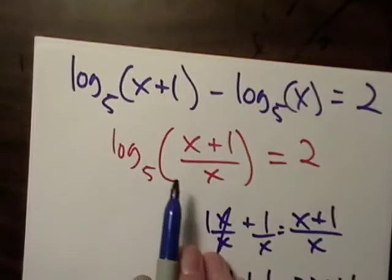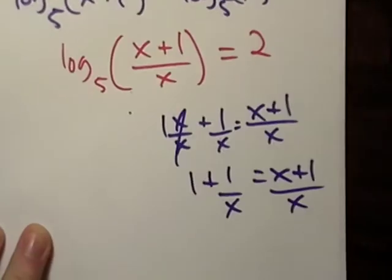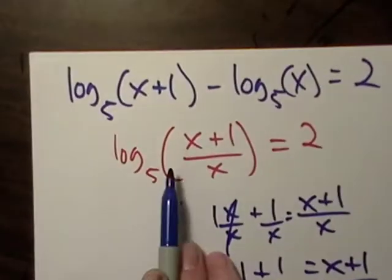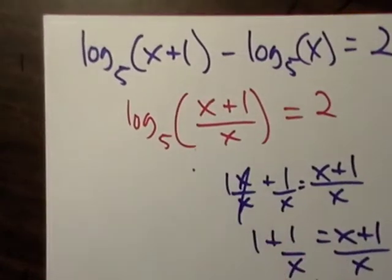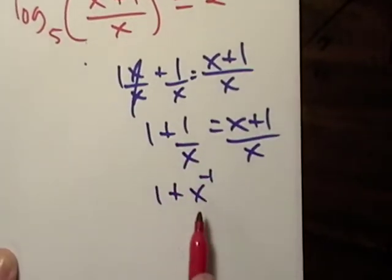So that's going to end up giving me 1 plus x to the negative 1. That's all I did - I just went through here and ended up rewriting it.